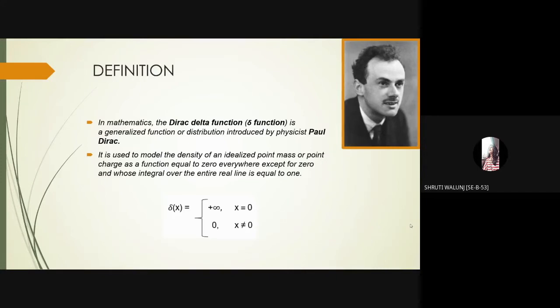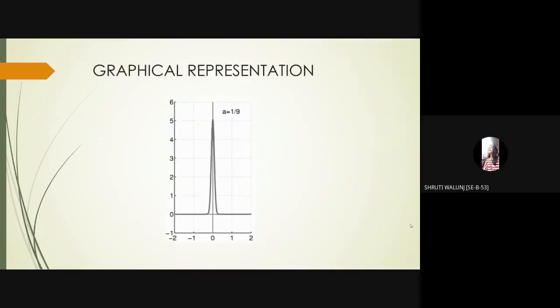It is also called the delta function or the impulse symbol. In mathematical terms, it can be stated as delta of x is equal to infinity at x equal to 0, and it is equal to 0 at x not equal to 0. This is a graphical representation of Dirac delta function.